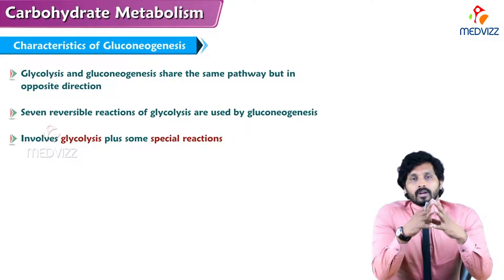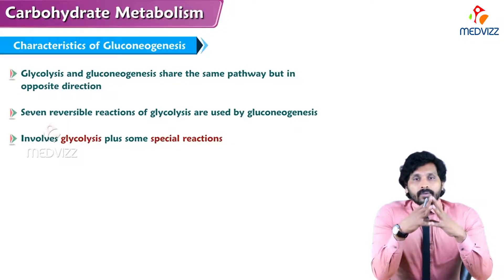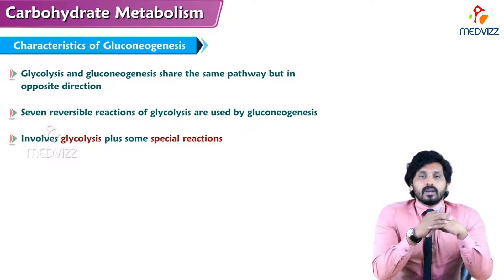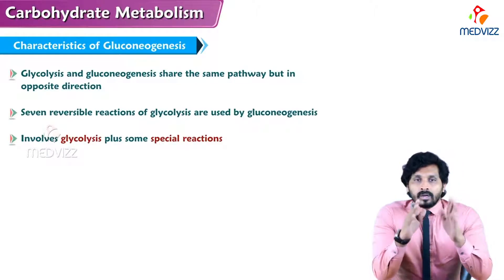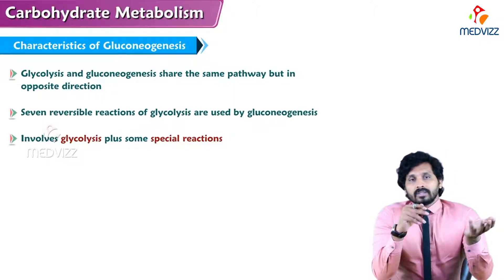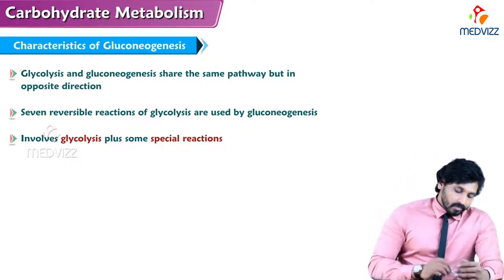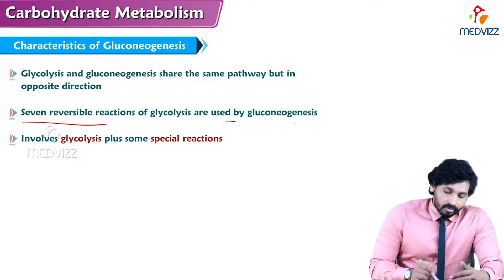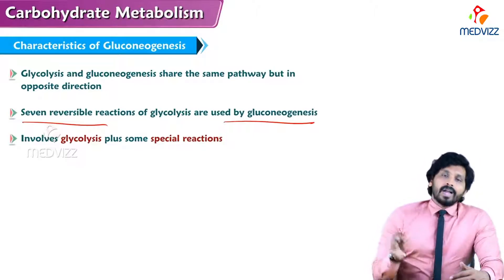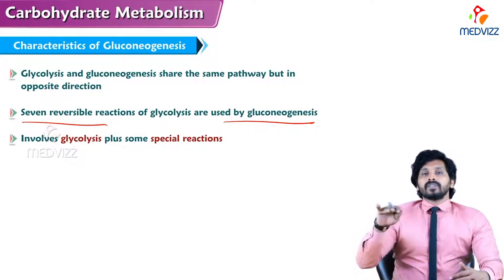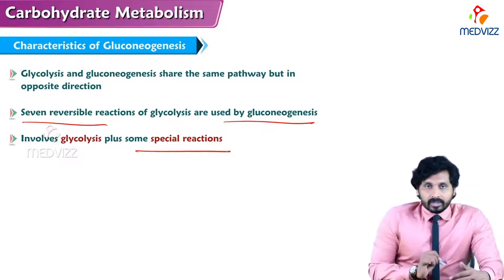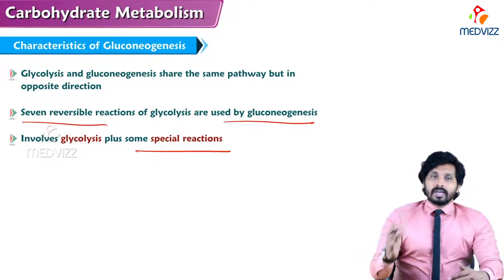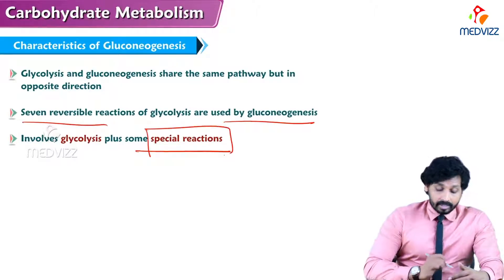Gluconeogenesis is not 100% a reversal of glycolysis. The reason is that the first, third, and tenth steps of glycolysis are irreversible. The other seven steps are reversible, and those seven reversible reactions of glycolysis are used by gluconeogenesis. For the three irreversible steps, you have to bypass those reactions with the help of special enzymes or special reactions.